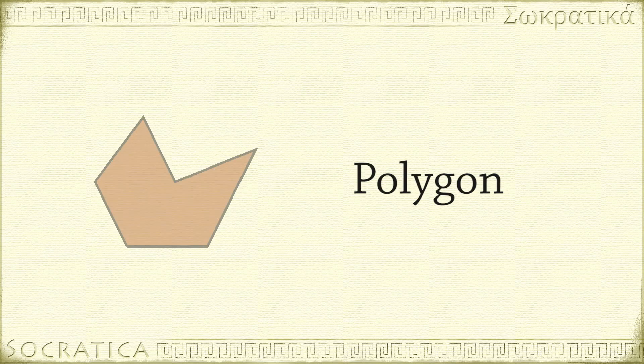A polygon is a flat shape with straight edges that is closed. Closed means there are no gaps in the shape. Each polygon is given a name depending on how many sides it has.